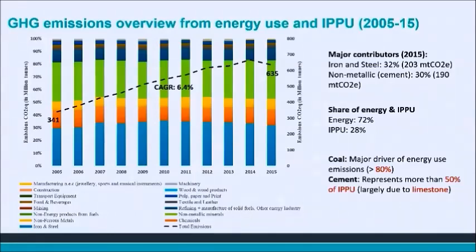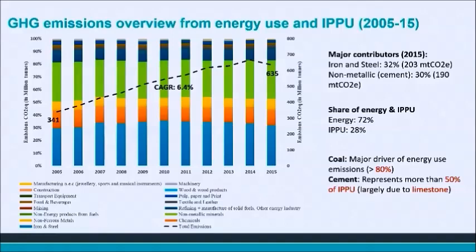The industrial sector emissions increased from 341 million tons in 2005 to 635 million tons in 2015, increasing with a CAGR of 6.4%. At a sectoral level, the two big sectors are iron and steel, and non-metallic minerals — primarily cement — almost equally contributing to industrial emissions. In terms of type of emissions, industrial emissions are primarily driven by fuel use, the bulk of which is created by coal, responsible for more than 80% of fuel use emissions. In terms of IPPU emissions, the majority are driven by process emissions involved in cement production.